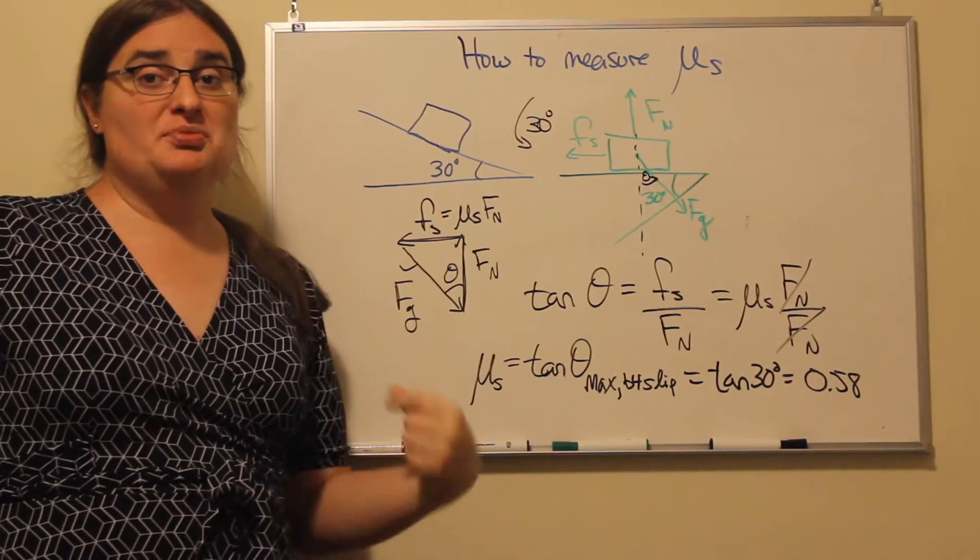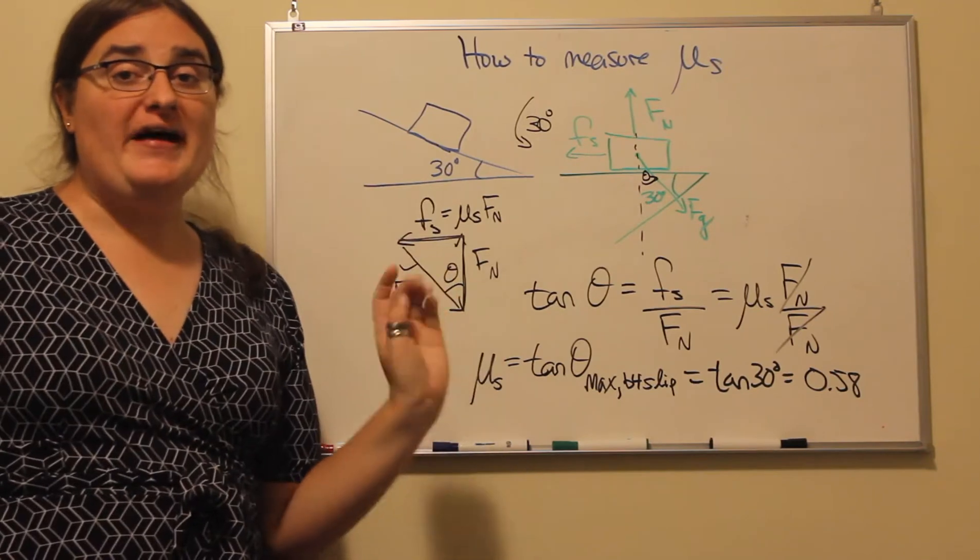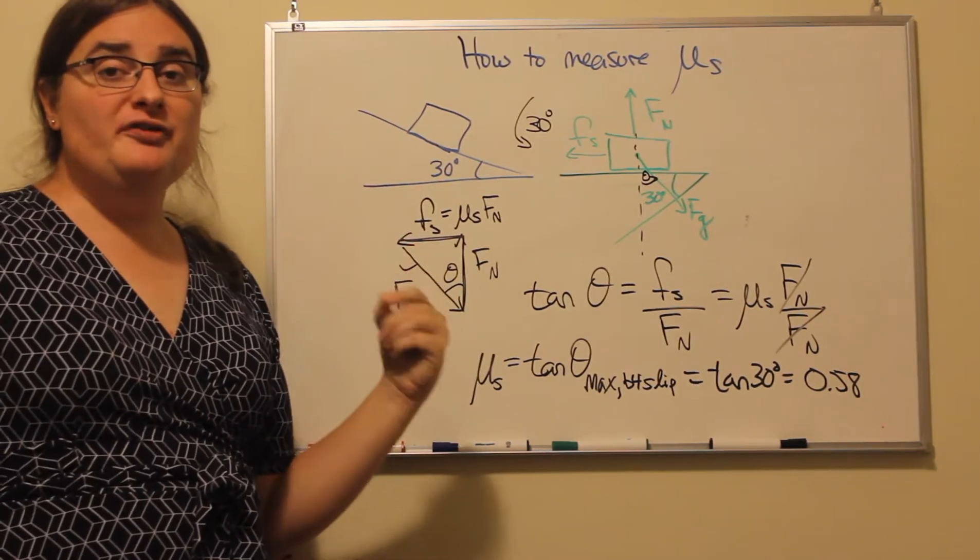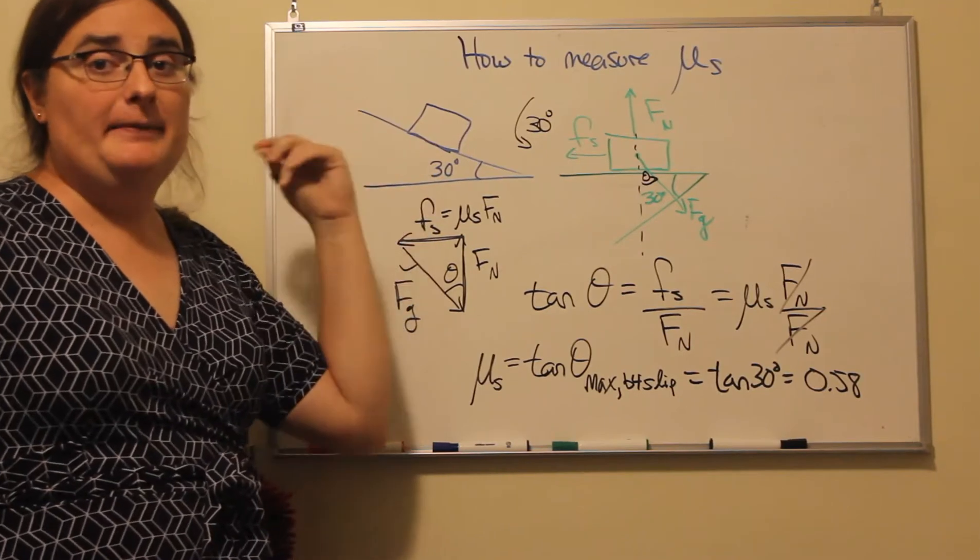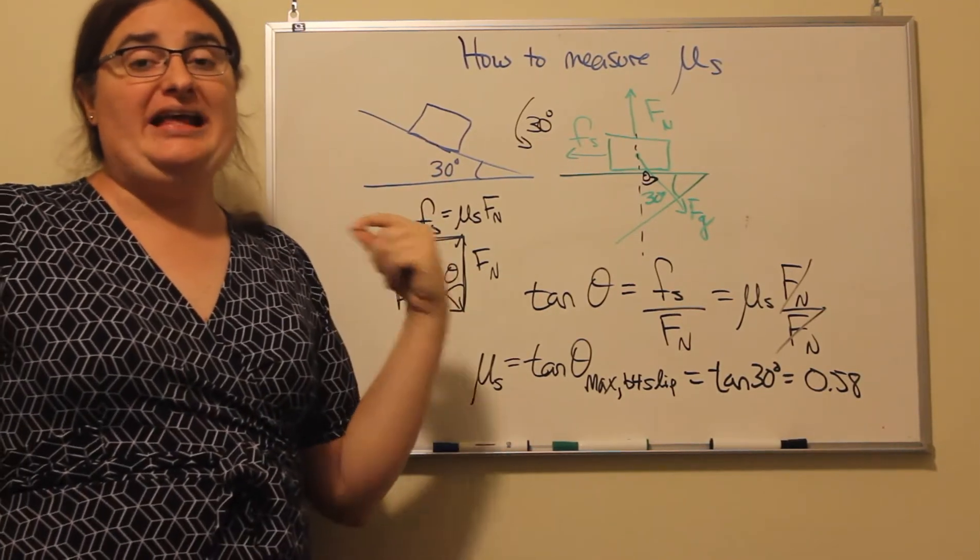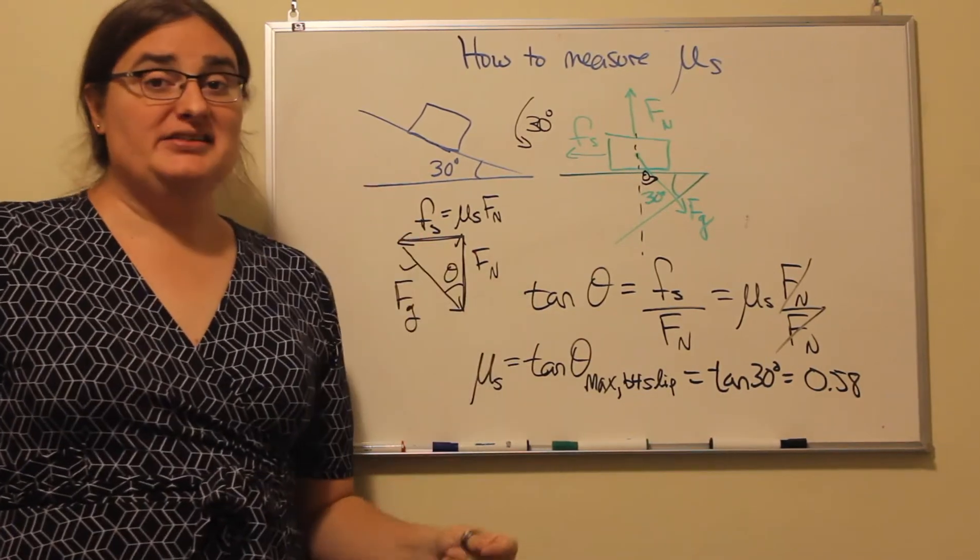What you do is adjust the angle of that ramp until you find the angle where it will remain at rest, but beyond which it cannot be made to be at rest. That maximum angle will allow us to calculate the coefficient of static friction.